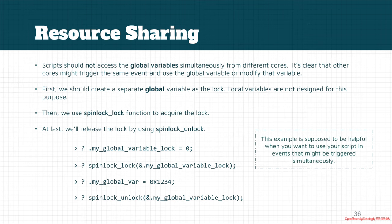If you want to use a global variable or a shared object in the HyperDBG script engine, you can use the spinlock functions. With these spinlock functions, we should use global variables. Keep in mind that locks are always global variables. For example, if you want to access a global variable simultaneously across events, you would use a spinlock.